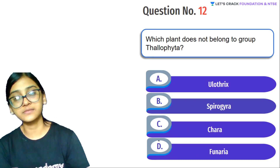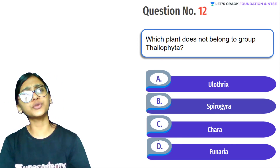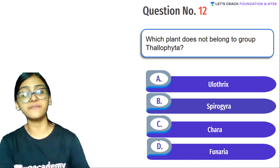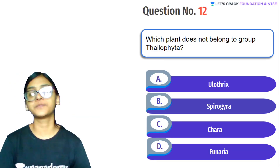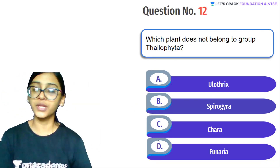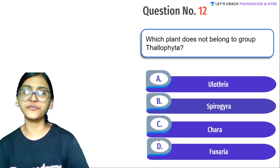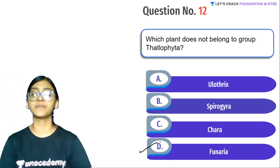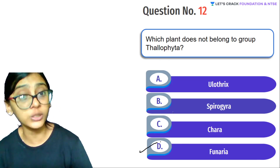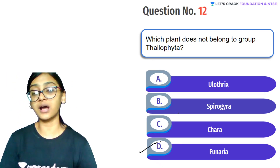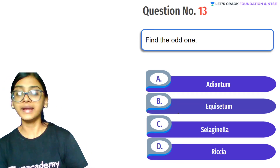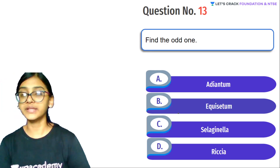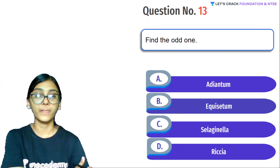Next question: Which plant does not belong to the group Thallophyta? Options: Ulothrix, Spirogyra, Chara, Funeria. The question asks which does NOT belong to algae. Answer quickly — you are right. Funeria (moss) belongs to Bryophyta. The rest — Ulothrix, Spirogyra, and Chara — all belong to Thallophyta.